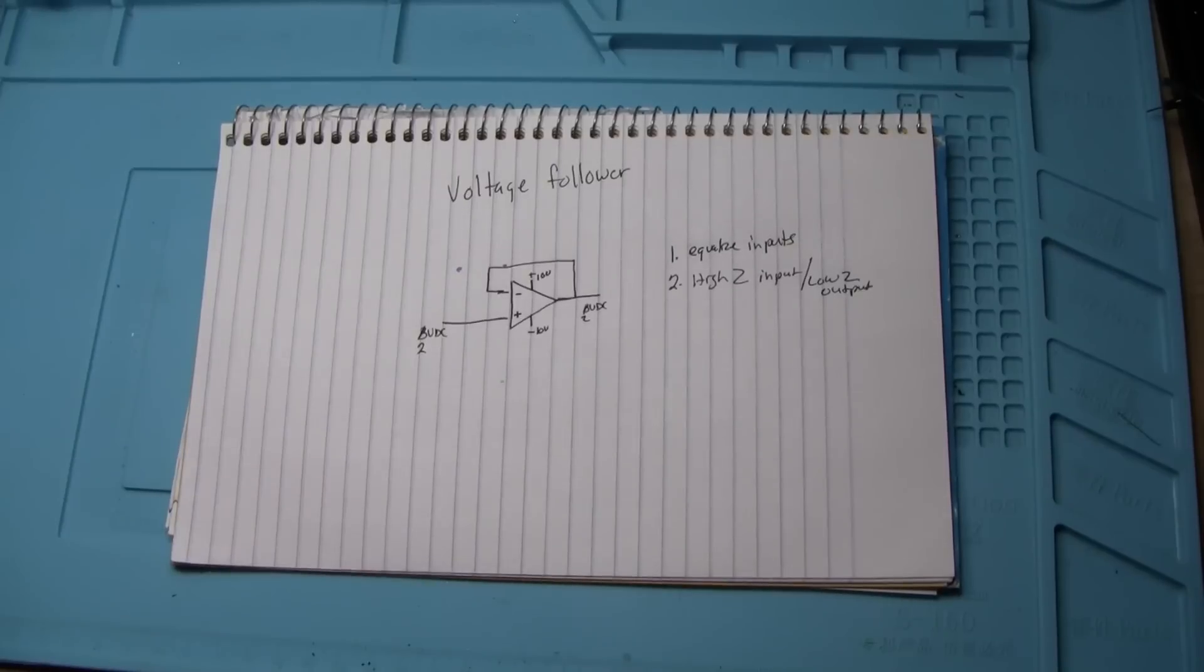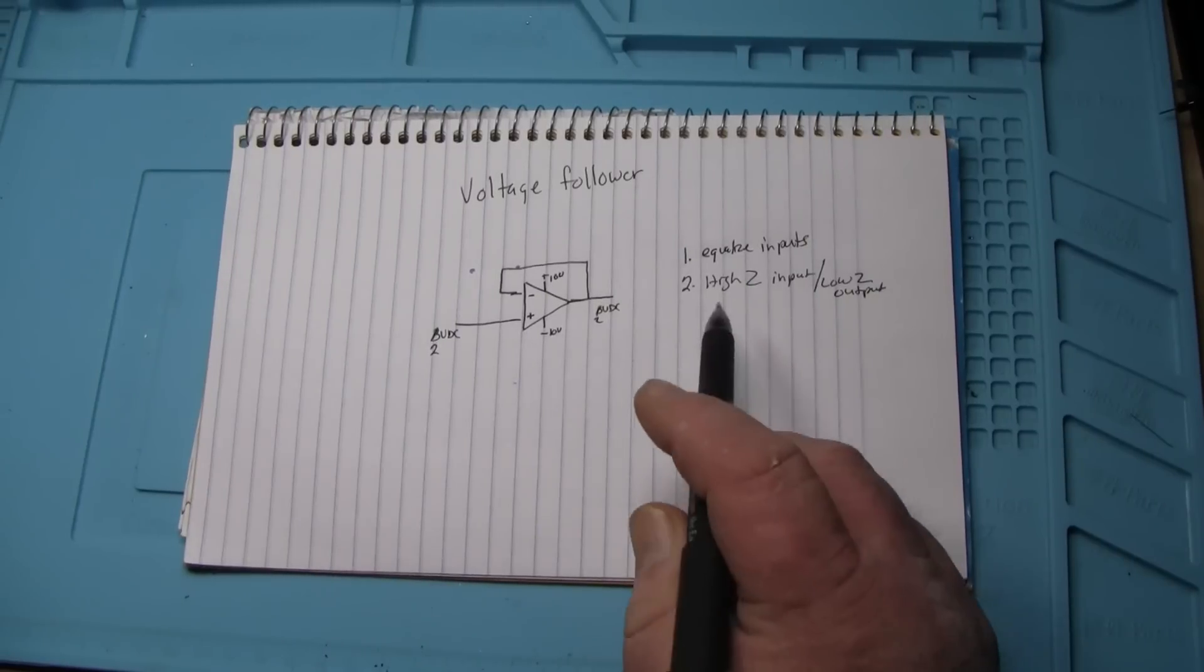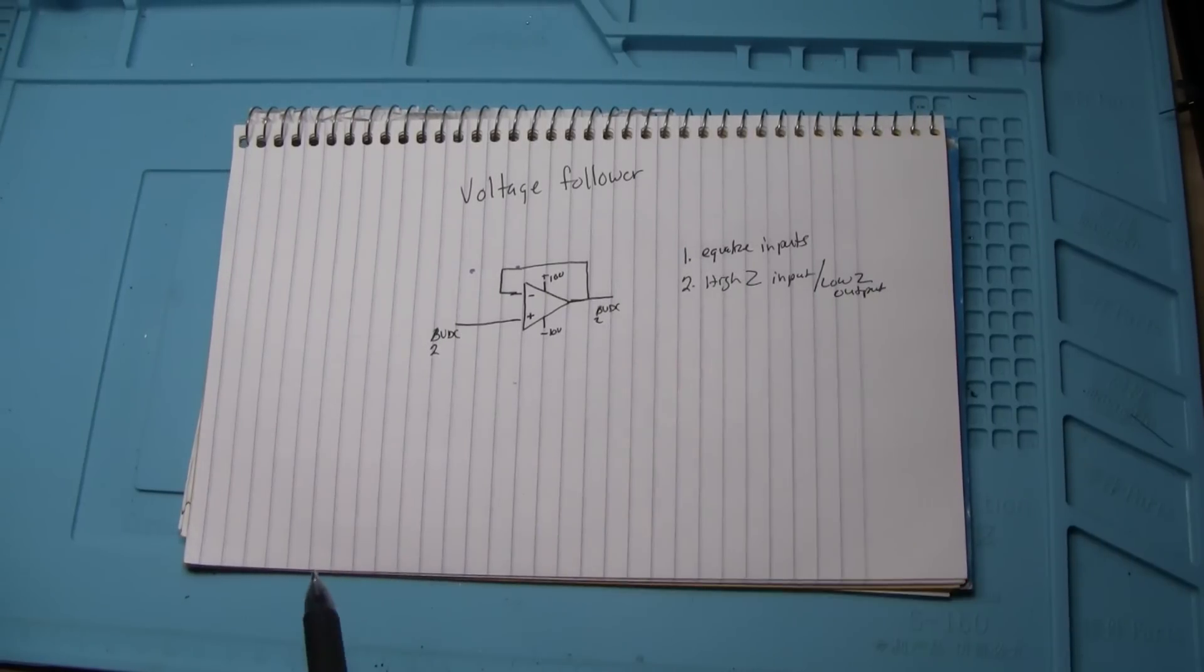Are you with me so far? Good. Now let's take a look at where this is useful and why we like the high Z input and the low Z output.